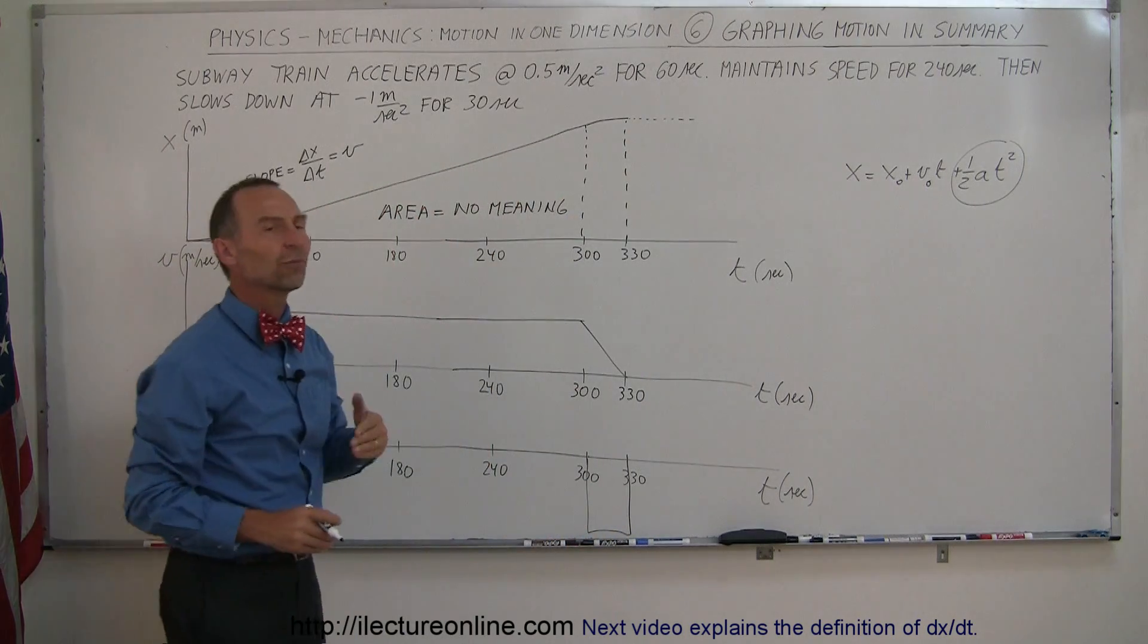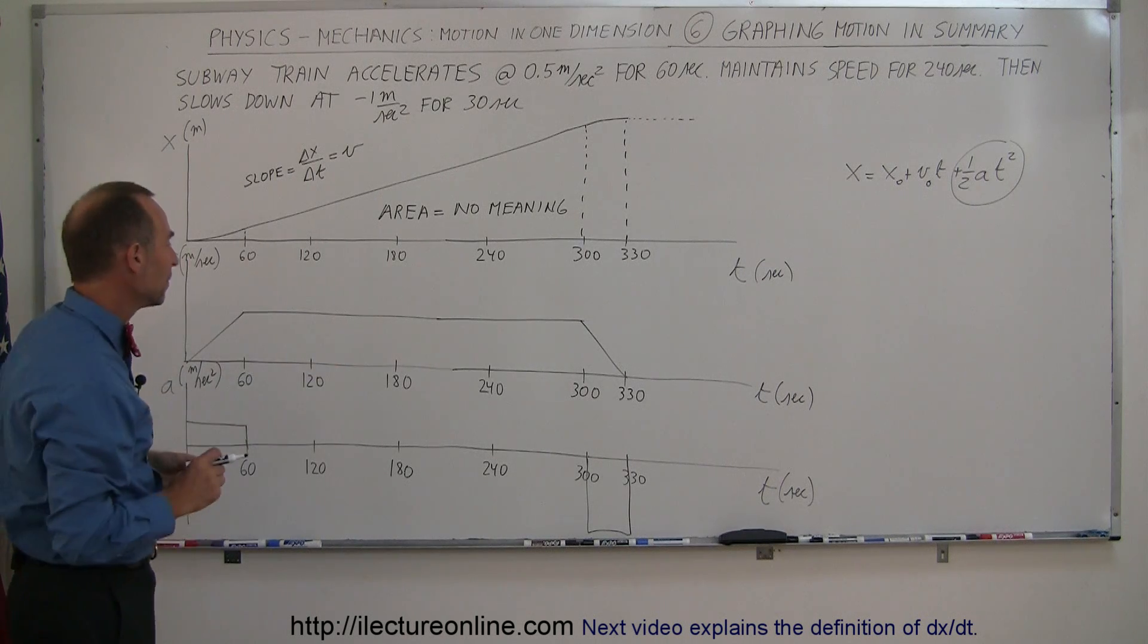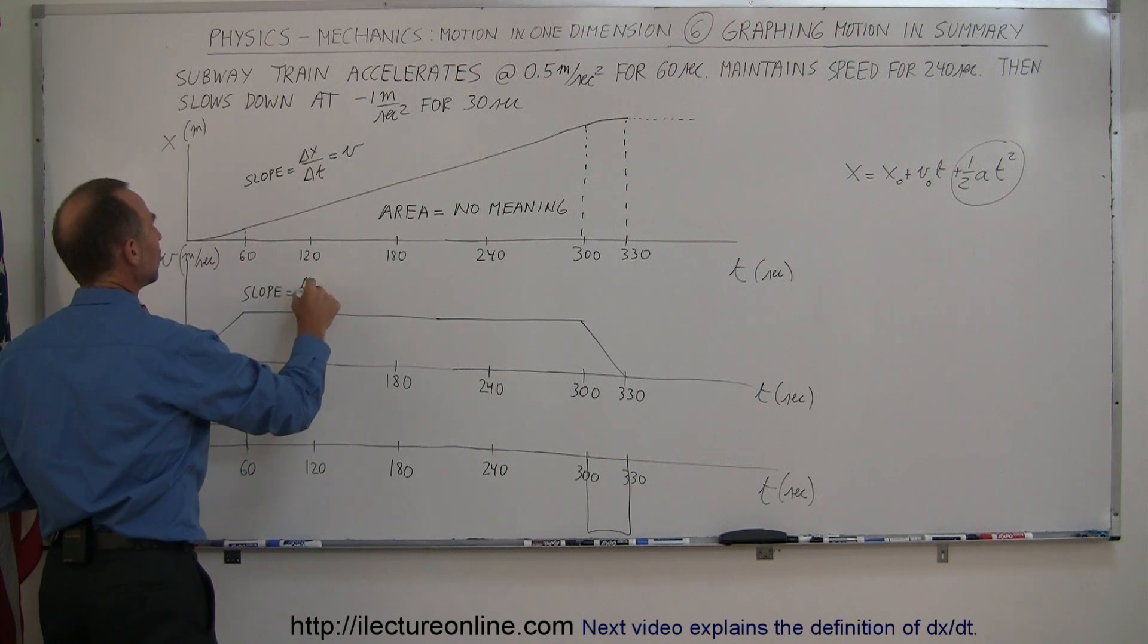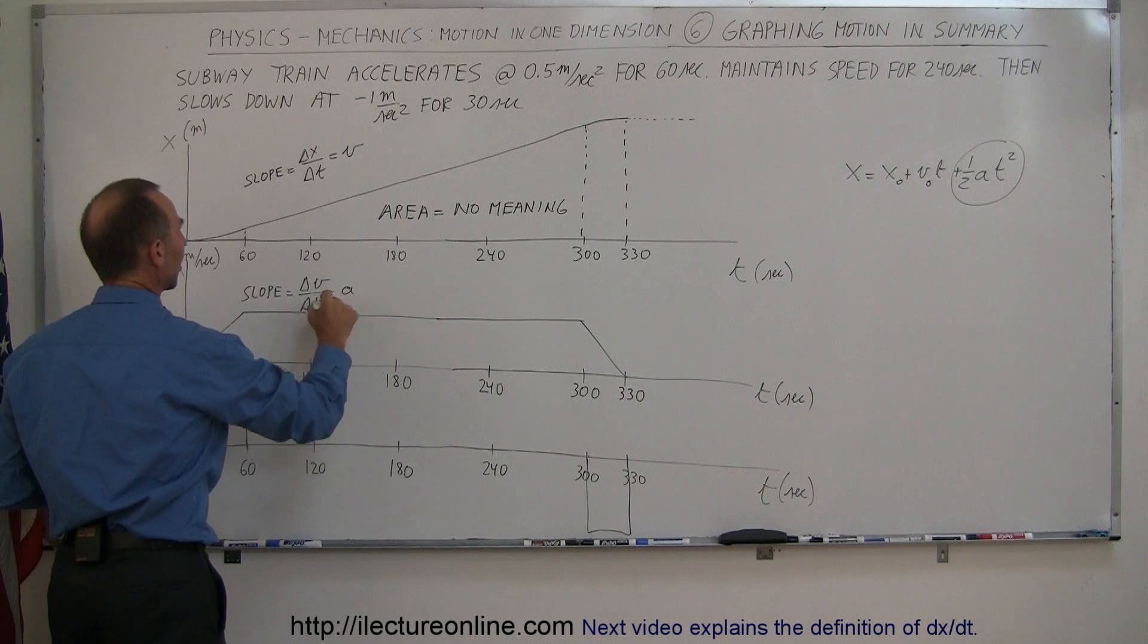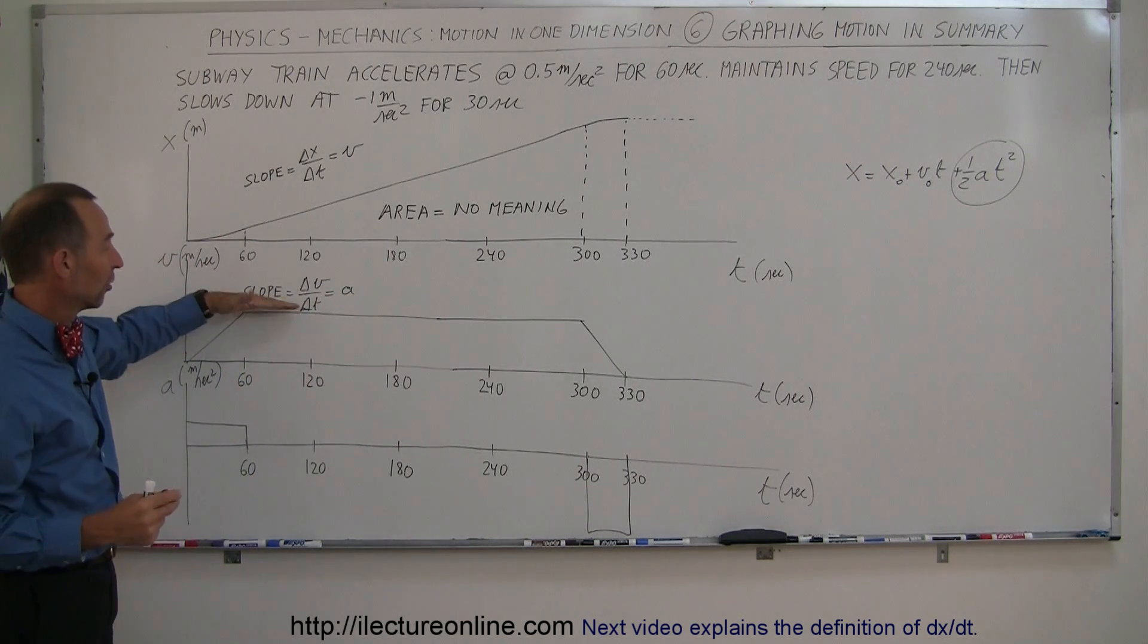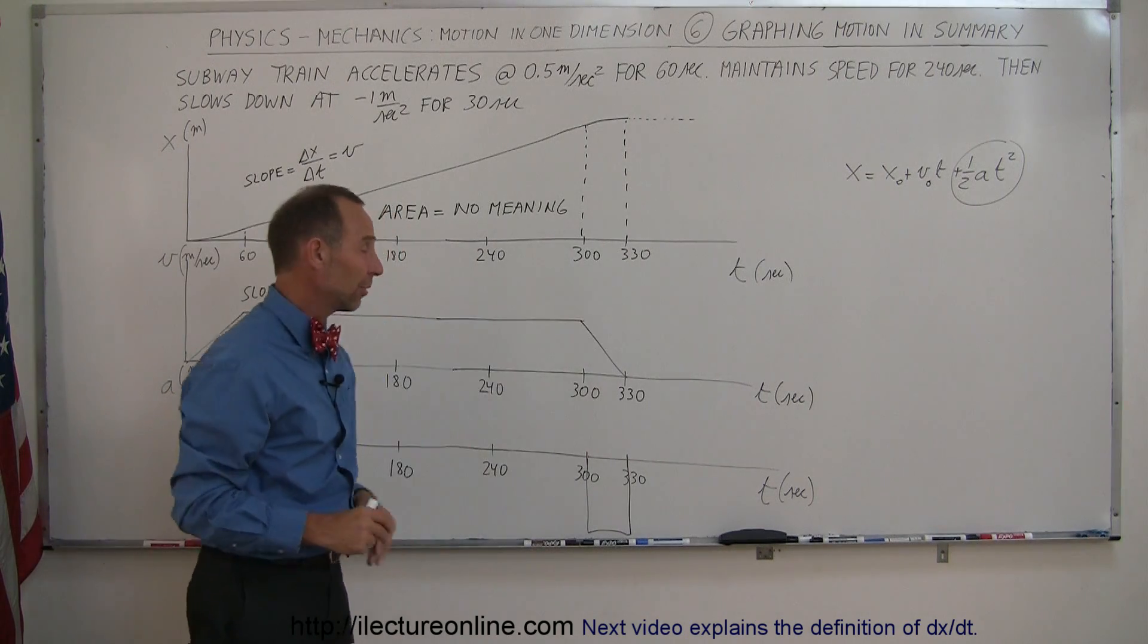On the second curve, we have velocity versus time. The slope here represents the change in velocity over time, which by definition is acceleration. Here you can see you have a positive slope, positive acceleration, zero slope, no acceleration, negative slope, negative acceleration.